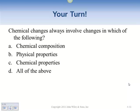Chemical changes involve a change in which of the following: chemical composition, physical properties, or chemical properties? A chemical change always involves all of these. The chemical composition changes — it's no longer sodium metal, it's now sodium chloride. Physical properties change as well — when gas burns it's no longer a gasoline liquid, it becomes a gas. And the chemical properties usually change too. So everything changes when you have a chemical change.